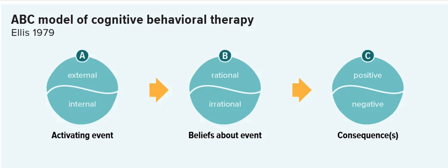We need to identify and change that belief to convert this negative feeling into a positive one. We cannot change the activating event, so we can only change what is in our own hands — our belief. The belief might be that you feel insecure: 'Maybe I'm not good enough, that's why that person hasn't greeted me.' That belief is wrong and needs to be fixed. Replace it with a better belief: 'It's okay if they didn't greet me — it does not in any way determine whether I am good enough or not.'